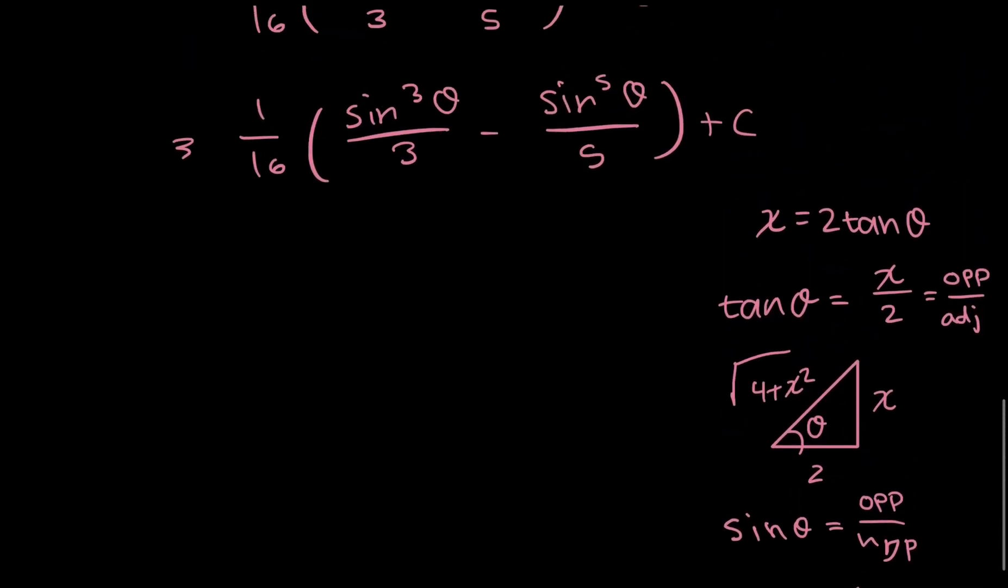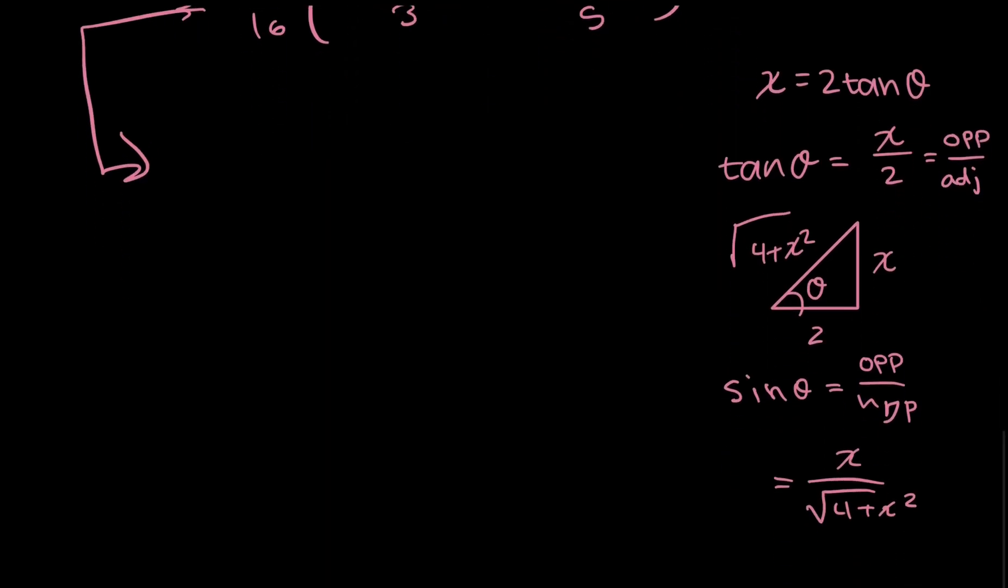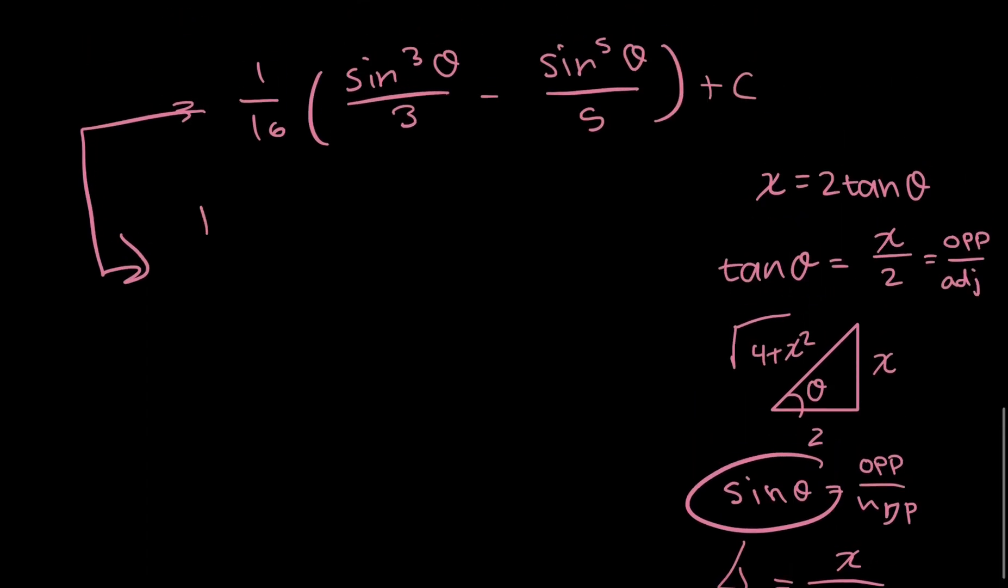So now, going back to my solution over here, I'll just rewrite this sine in terms of x. So I have 1 over 16 times x cubed over the square root of 4 plus x squared